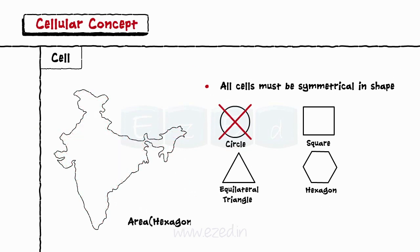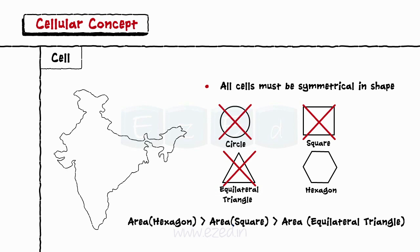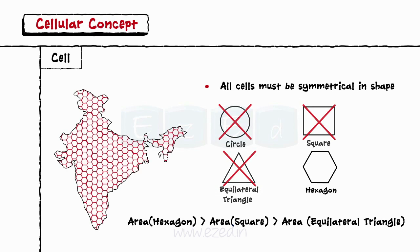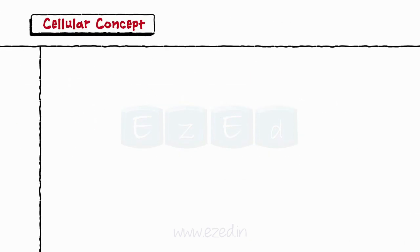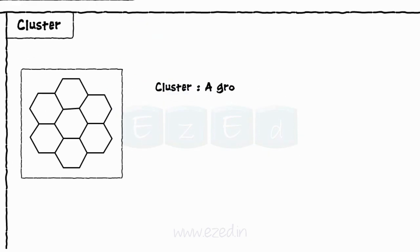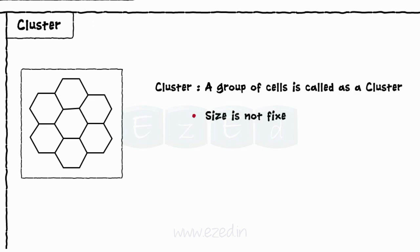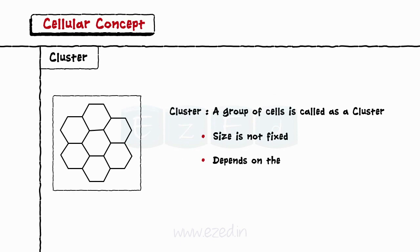Hexagon has the highest area as compared to the other two shapes. Thus, we divide the geographical area into hexagonal cells. The next concept is a cluster. A group of cells is called a cluster. The cluster size is not fixed — it depends on the requirements of the area.